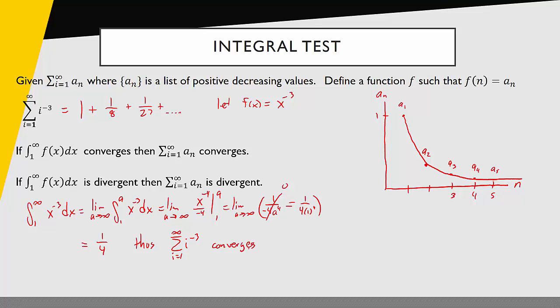One common misconception is to say that the sum of the series is the value of this improper integral — that is absolutely not true. The sum of the series is not equal to 1 fourth; we're simply looking at this to see whether it converges or doesn't converge. We can justify this process graphically: if we generate a rectangle associated with each of the points, the area of each rectangle is the value of the term. The sum of the series is the sum of the area of all these rectangles, and the improper integral represents the area under the curve. If that area under the curve is a finite number, then surely the sum of the area of the rectangles also has to be a finite number.